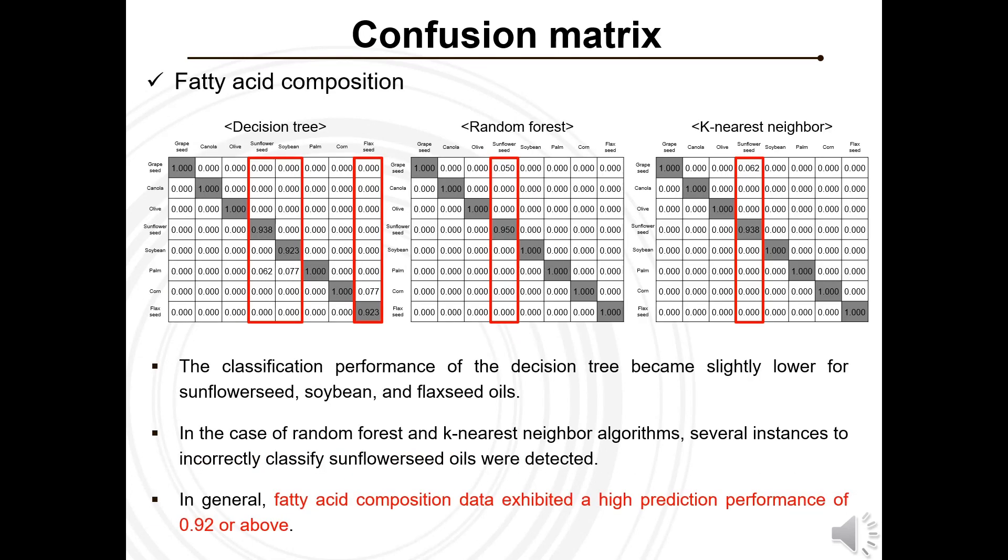By utilizing fatty acid composition analysis data, we achieved a classification accuracy of 92% or higher for different types of oils, although there were some errors observed. Notably, both the random forest and k-nearest neighbor models exhibited a perfect classification performance of 100% for all oils, except sunflower seed.